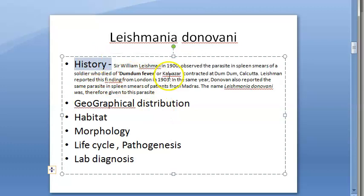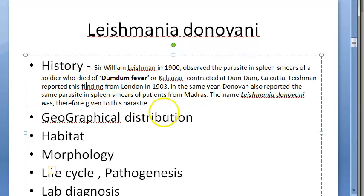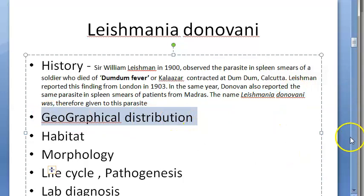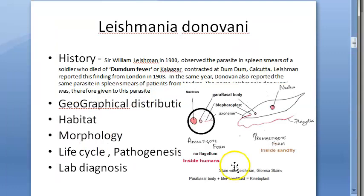Historically, in 1900 this parasite was observed in a dead soldier who died of Dum-Dum fever or kala-azar in Dum-Dum, Calcutta. Leishman found this parasite, and Donovani also reported a patient from Madras in the same year. Together their names were joined to give the name Leishmania donovani. The geographical distribution spans Old World and New World as discussed; the habitat confirms it is a hemoflagellate.